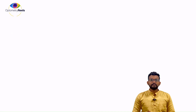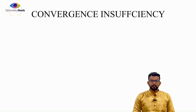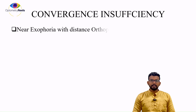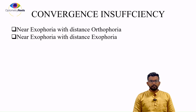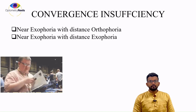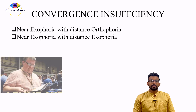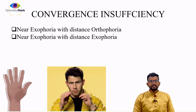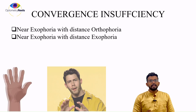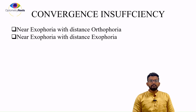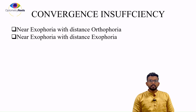In convergence insufficiency, obviously there will be exophoria for near. For distance, there may be orthophoria or exophoria. The symptoms of convergence insufficiency — there will be more problems for near. Patients will be talking about diplopia, blurred vision, and eye strain whenever doing near work. Also, sometimes when reading, people will be feeling sleepiness, which could be a reason for a patient having convergence insufficiency.